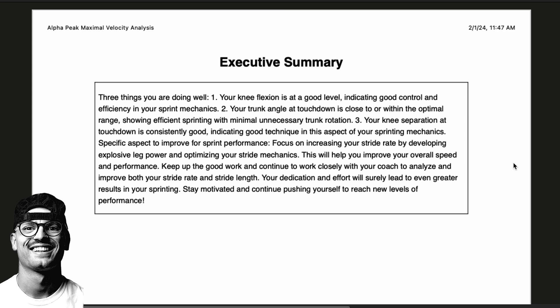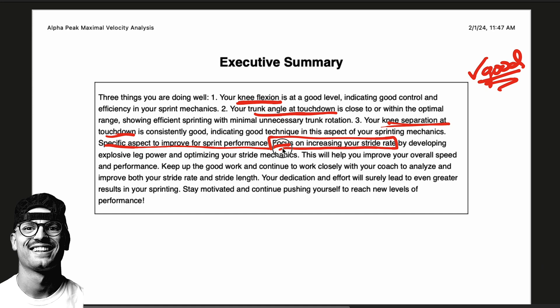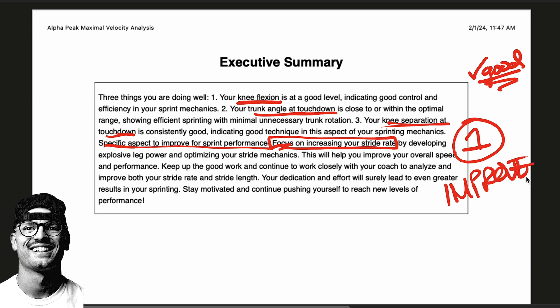Alpha Trainer gives Haven three things he did well and one thing to improve. His knee flexion looks very good, his trunk angle at touchdown looks very good, and his knee separation at touchdown looks very good. The one thing to improve is increasing stride rate. As a coach, if I were to manually go through all of this data, that is also what I would identify as the number one area to improve. The AI is very good at taking all the data, looking at all the athlete's parameters, and making an informed recommendation for coaches and athletes on what to focus on.